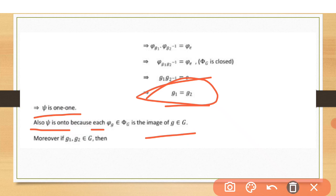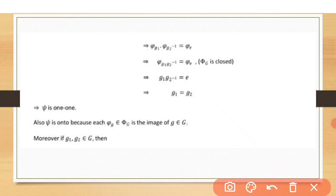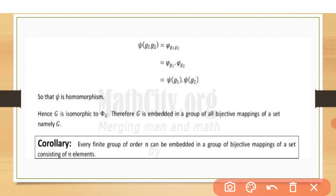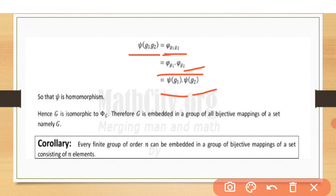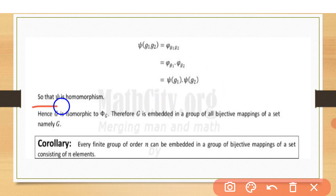Now we prove the third condition: homomorphism. Consider psi(g1 g2): this equals phi_{g1 g2}. Since phi_{g1 g2} = phi_{g1} ∘ phi_{g2} = psi(g1) ∘ psi(g2), the operator is preserved. Therefore psi is also a homomorphism. All three conditions of isomorphism are fulfilled, so G is isomorphic to phi(G).